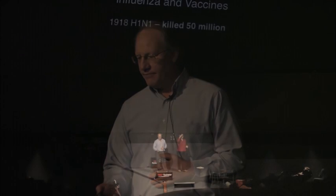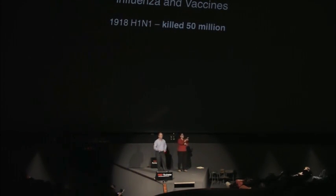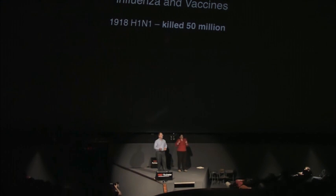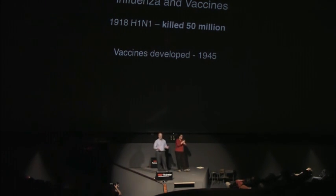Let's talk about influenza—everybody knows about the flu. There was a Spanish flu in 1918, and that killed about 50 million people around the world; it was a huge pandemic. Since then, we've had lots of other pandemics. In the middle of the last century, some vaccines were developed, and now we have flu vaccines that most of us get, preventing a lot of deaths and sicknesses from the flu.